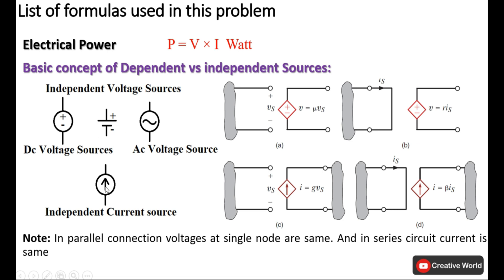It doesn't matter what changes have been made in the circuit or which elements we have used — they will always keep their characteristic constant voltage and constant current. On the other side, on the right side, we have dependent sources.